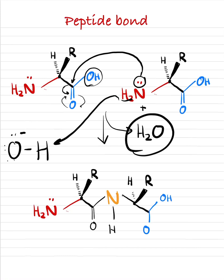Another thing to notice is that when a polypeptide is being synthesized, the start is going to be an amino group and the end is going to be a carboxyl group. So synthesis is happening in this direction right here.